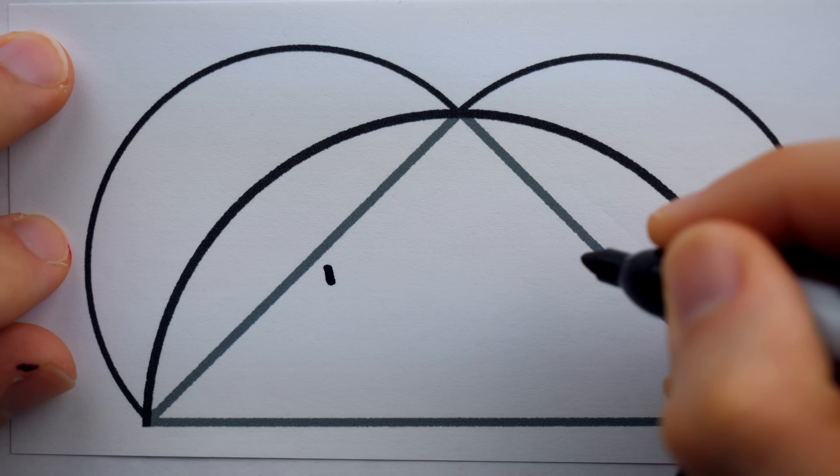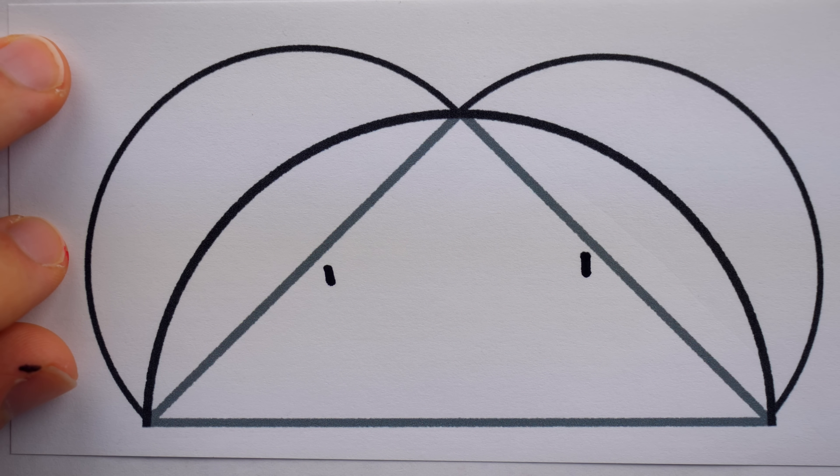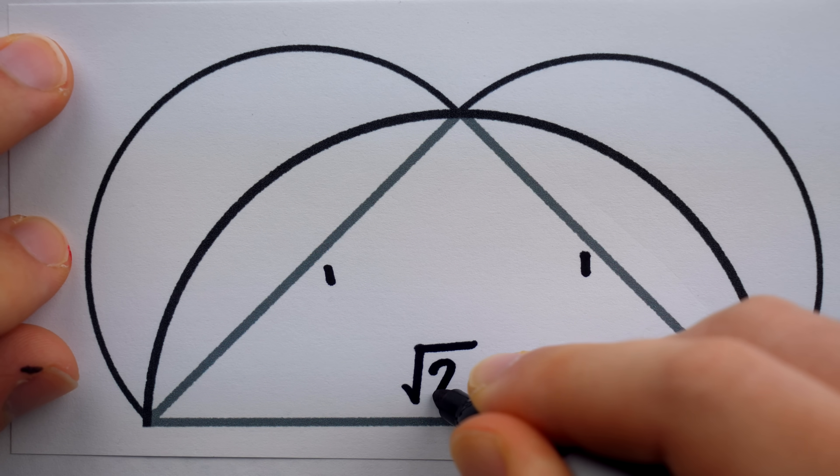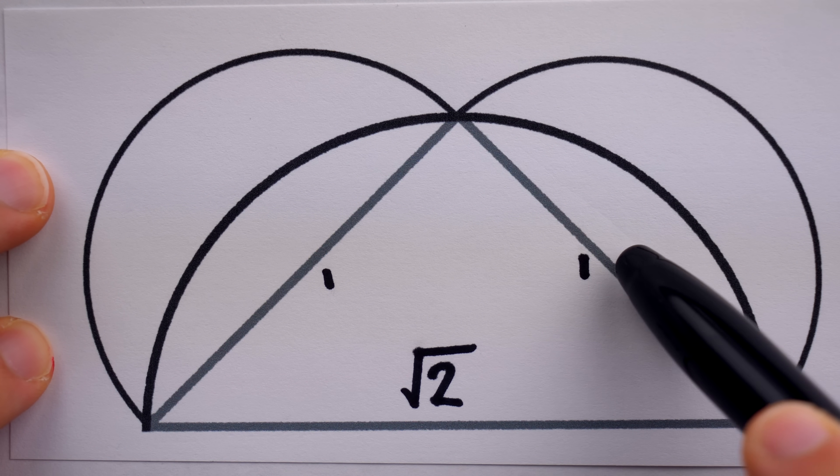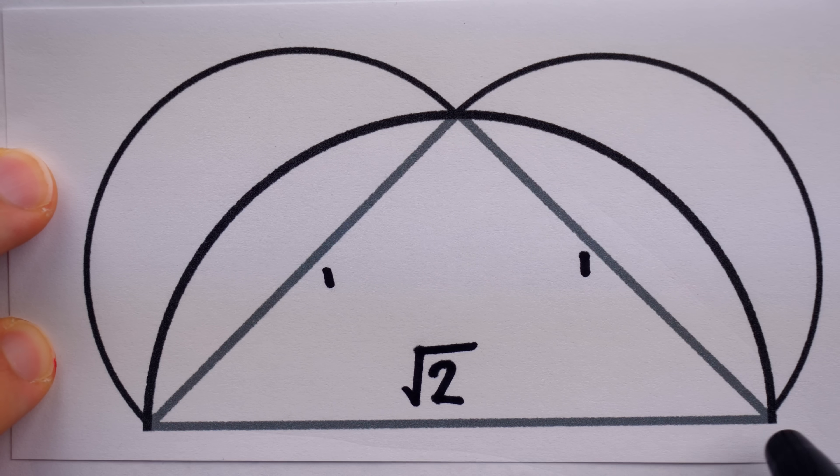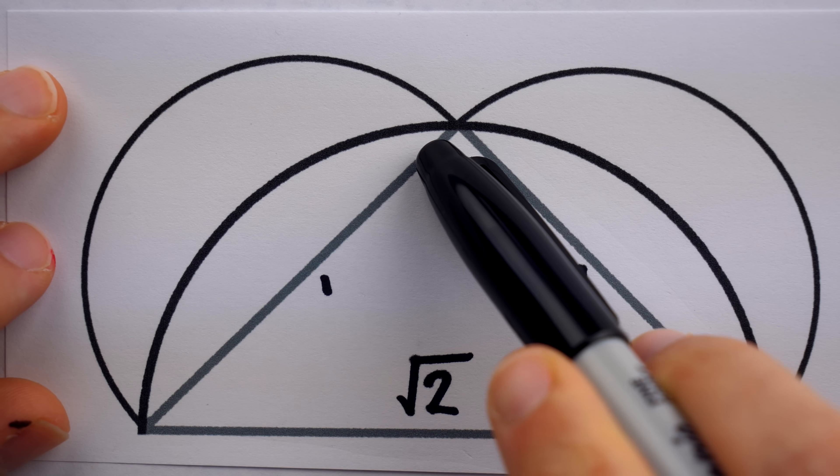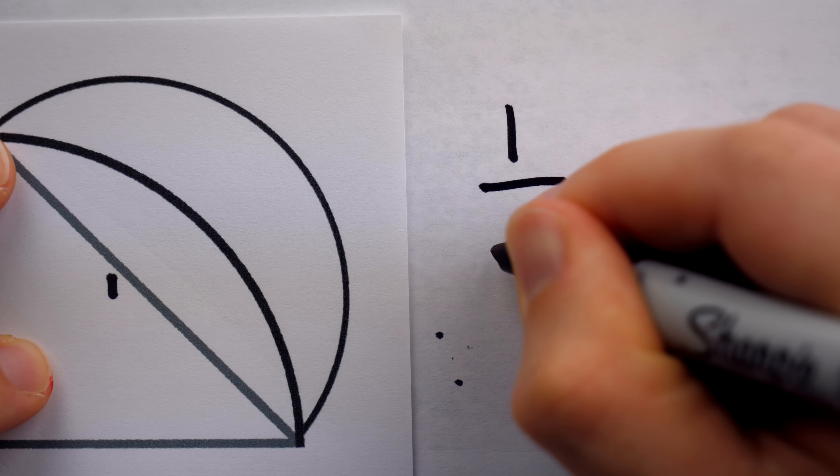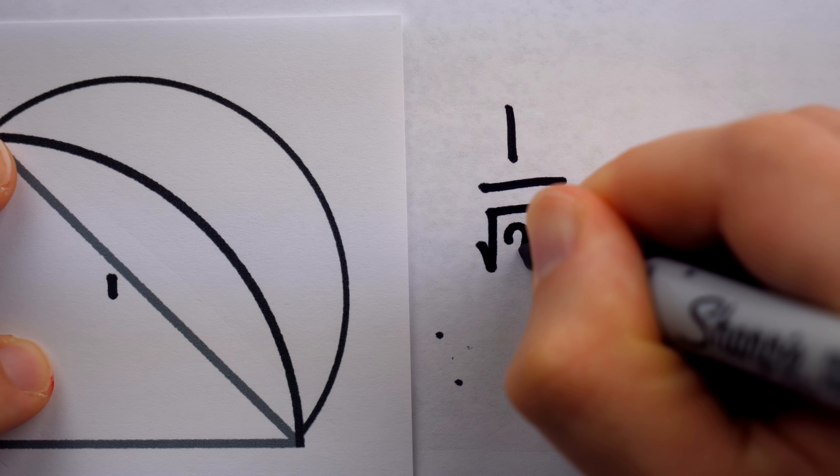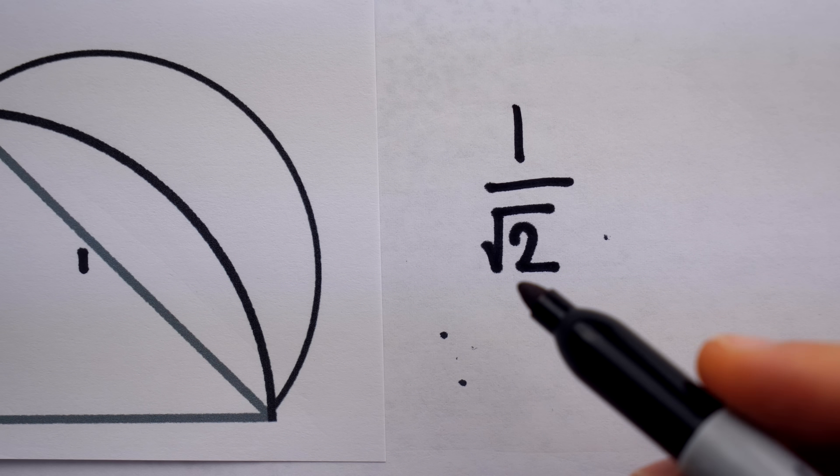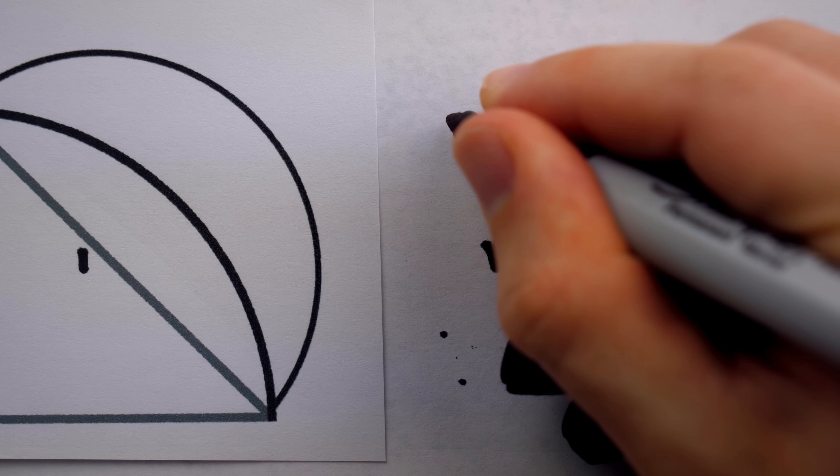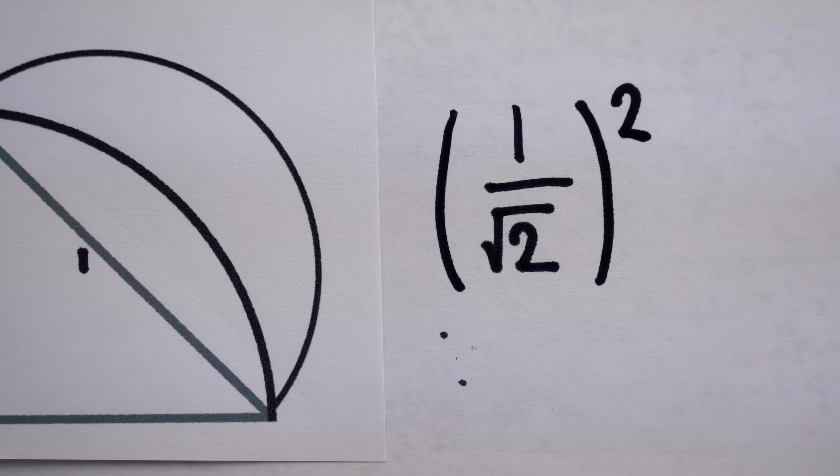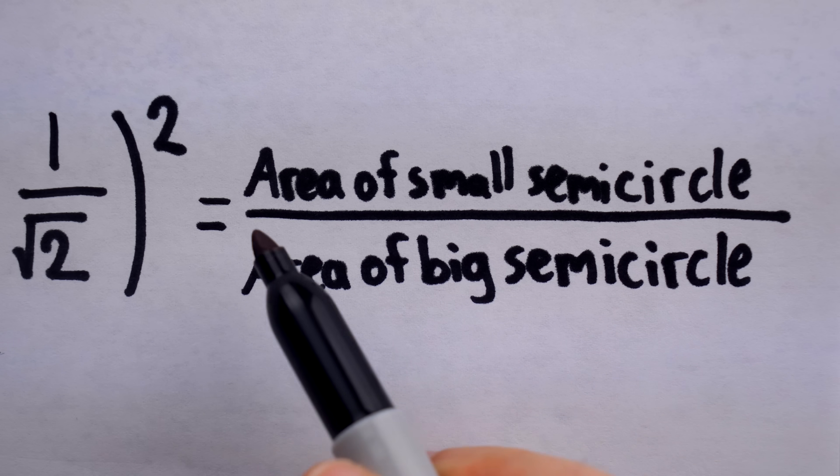So, if we regard the congruent legs of the right triangle to have lengths of one, then by the Pythagorean theorem, certainly the hypotenuse has a length of square root of two. Because one squared plus one squared has to equal c squared, so the hypotenuse c is root two. So now we know how the diameters compare. The ratio of the diameter of the small semicircles to the big semicircle is one to root two. And although the exact area of a circle wasn't yet known, Hippocrates did know this important fact. If you square the ratio of the diameters of two circles, you will get the ratio of their areas.